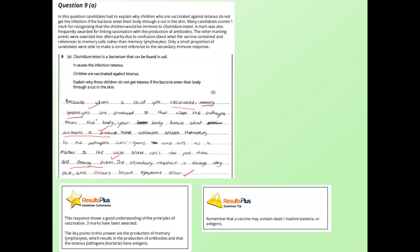So we've talked about getting a vaccination, memory lymphocytes, antibodies, and fighting them off or attacking them. This response shows a good understanding of the principles of vaccination and three marks were awarded. The key points in the answer are: the production of memory lymphocytes, which we talked about; production of antibodies, which we talked about; and the idea that they attach to the antigens on the bacteria. My response didn't actually have that, so that would be another key point to include. However, my response did have this — remember that a vaccine may contain dead or inactive bacteria or antigens. So although in my response we didn't talk about the antigens on the actual bacteria, I would have got my third mark from that point. So how did your answer compare to those? Thank you very much for watching.